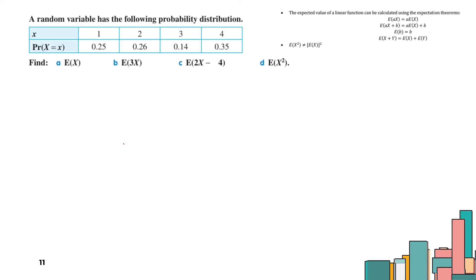A random variable has the following probability distribution. The expected value of a linear function can be calculated using expectation theorems. But before applying that, let us first solve without using the expectation theorem so we can compare.